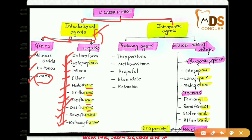For the intravenous agents, there are inducing agents and slower-acting drugs. The inducing agents include thiopentone, methohexitone, propofol, etomidate, and ketamine.